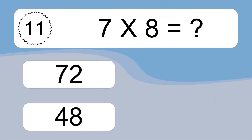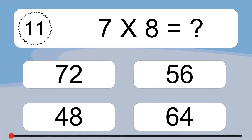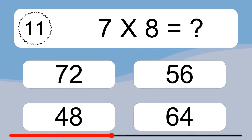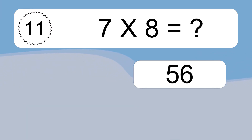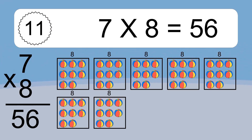7 times 8 equals what? We have 7 boxes, and each box has 8 colorful balls inside. If you count all the balls in all the boxes together, you will have 7 times 8 balls. This equals 56 balls.